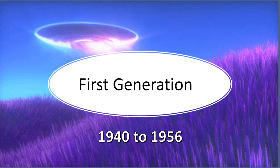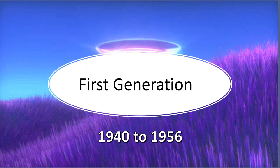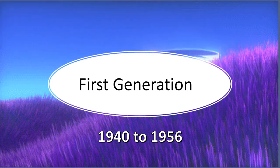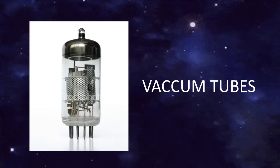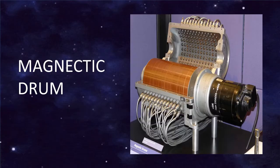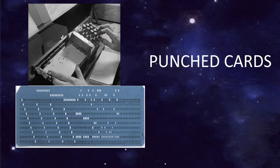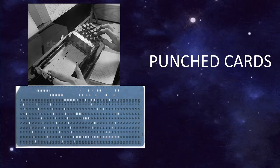First generation period is 1940-1956. Hardware used in first generation computers are vacuum tubes for circuitry. For memory, magnetic drums were used. Punched cards were used to input to the computer.